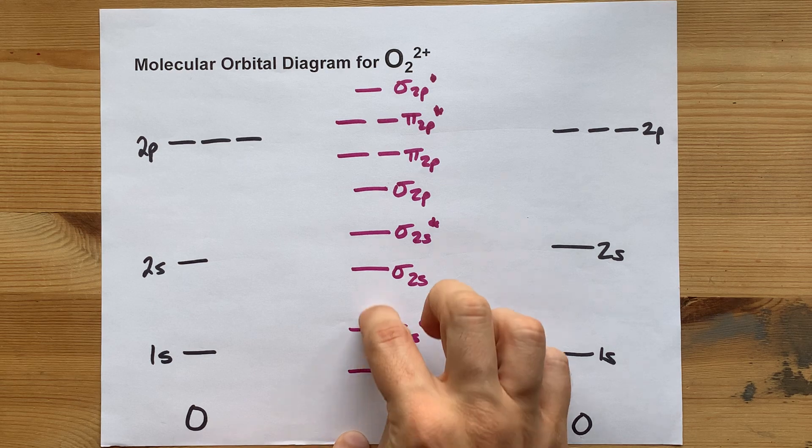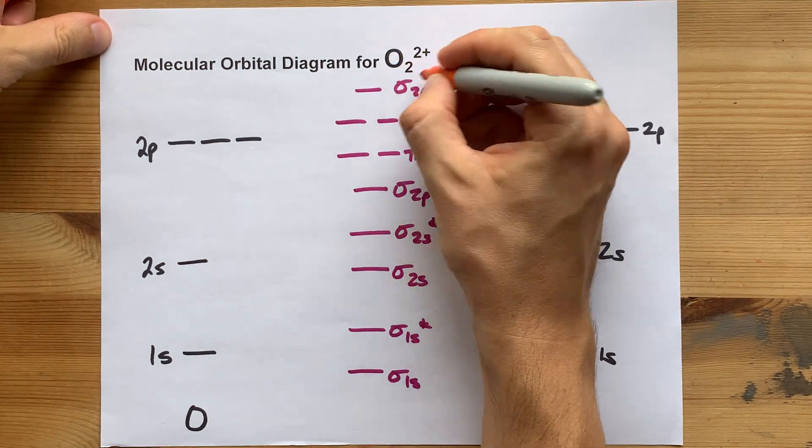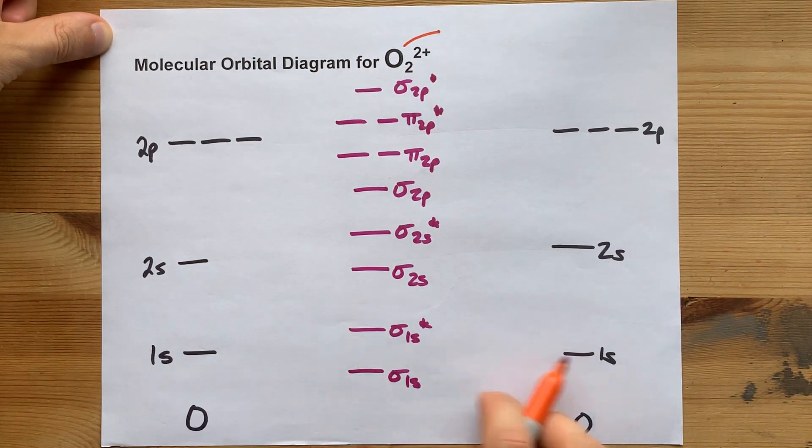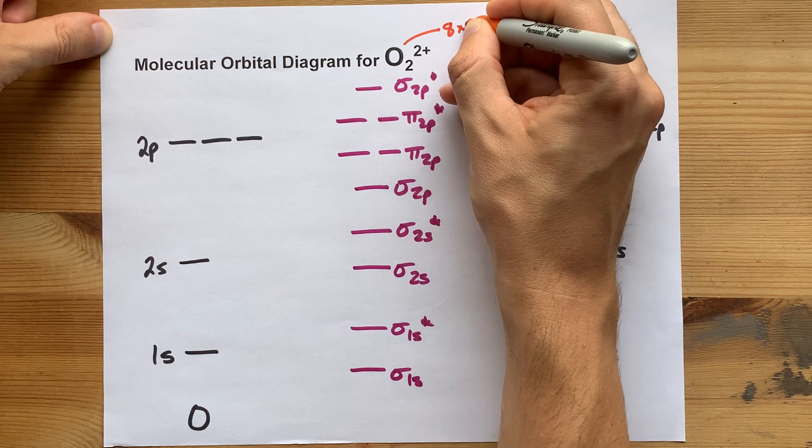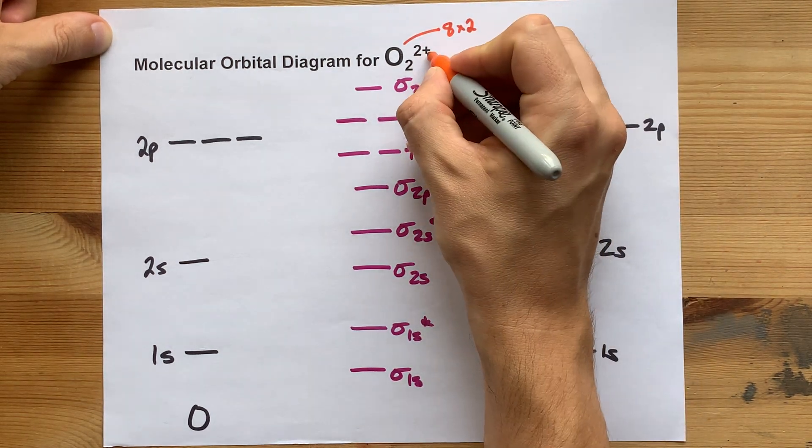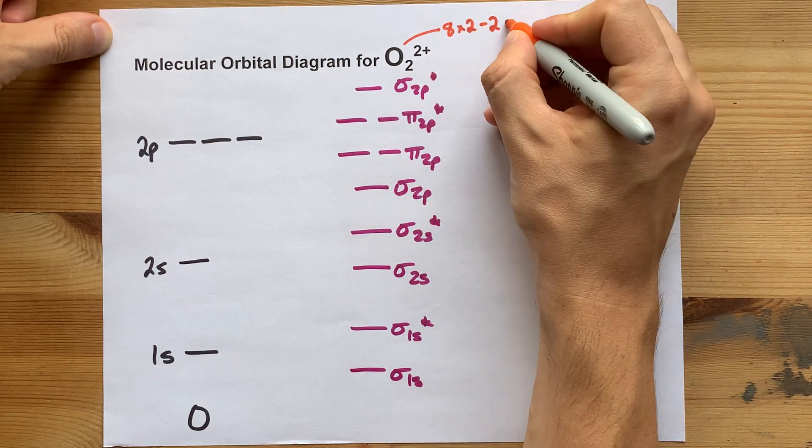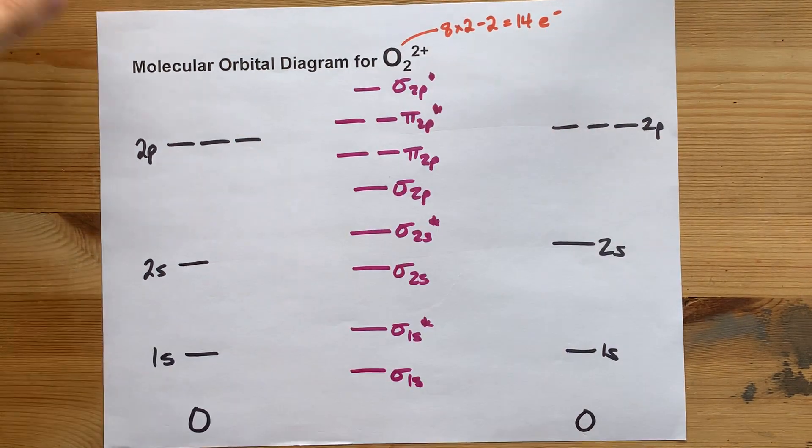Now, to fill this molecular orbital diagram, we're going to have to calculate the number of electrons here. If I include the first shell, then each oxygen brings 8 electrons, and there are 2 of them. But with a positive 2 charge, it means I've lost 2 electrons total, which means that I have 14 electrons in this species.